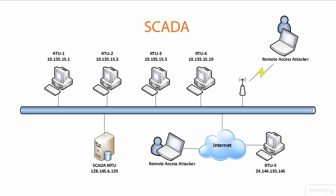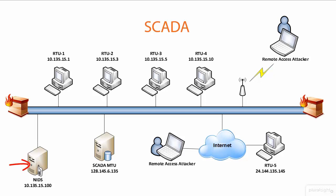One security approach: if SCADA terminals cannot be updated or patched, we wouldn't be able to apply a host-based intrusion detection system directly. However, we could deploy a network-based intrusion detection system. We can firewall off the network itself and put a network intrusion detection system in place so that if any attacker comes in remotely or attaches to the network, we can detect that intrusion.